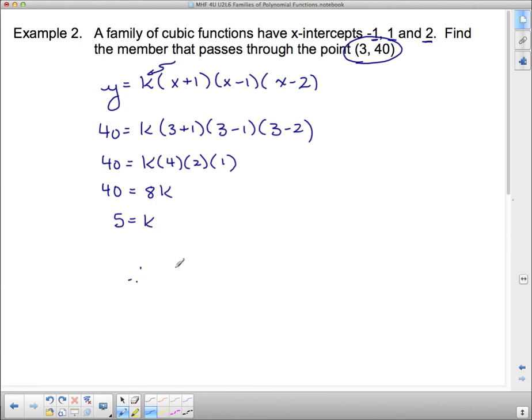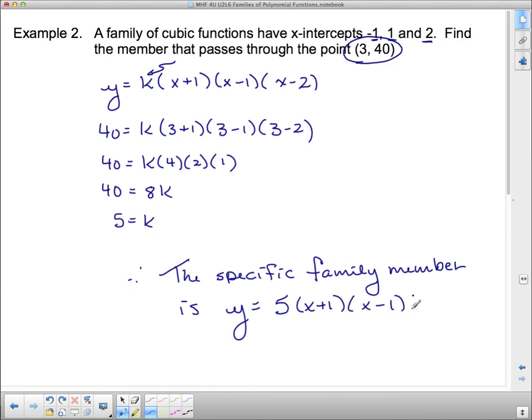So therefore, the specific family member is y = 5(x + 1)(x - 1)(x - 2). And we're going to leave it at that. We're under the 10-minute mark.